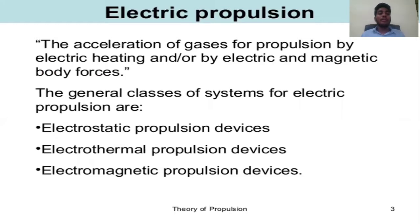Electric propulsion involves the acceleration of gases for propulsion by electric heating and/or by electric and magnetic body forces. The general classes of systems for electric propulsion are electrostatic propulsion devices, electrochemical propulsion devices, and electromagnetic propulsion devices.